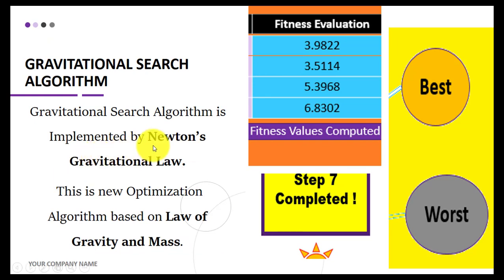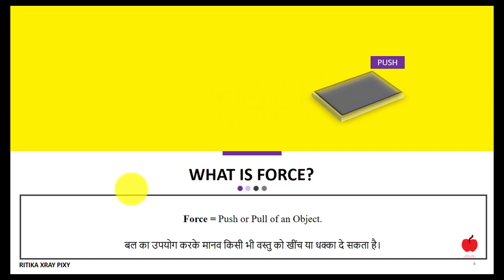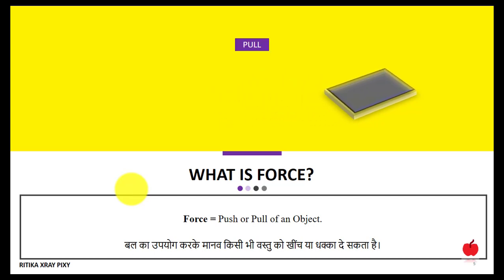The Gravitational Search Algorithm is implemented based on Newton's gravitational law. It is a new optimization algorithm based on the law of gravity and mass. First we will understand the basic concept: what is force? As we all know, force is a push or pull of an object.